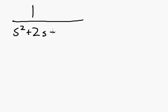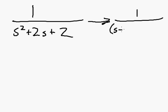Okay, so real quick, if I have the fraction 1 over s squared plus 2s plus 2, then it has roots that are complex: s plus 1 plus j times s plus 1 minus j.